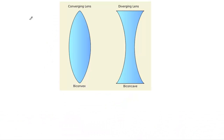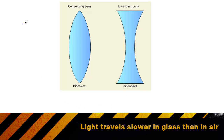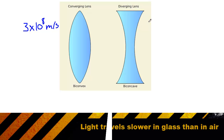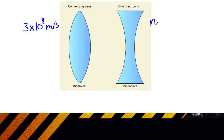When light is traveling through the air, it travels at about 3×10⁸ meters per second. When it hits a medium like glass or water, the light slows down — sometimes by a lot. We measure how much the light slows down with something called the index of refraction. The index of refraction is a number that represents the ratio of the speed of light — 3×10⁸ meters per second — divided by the velocity of light in a given medium.